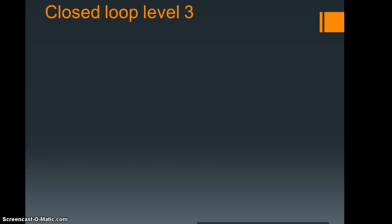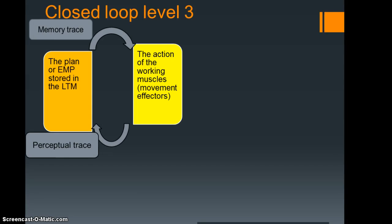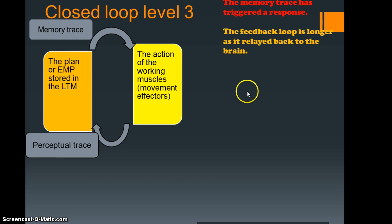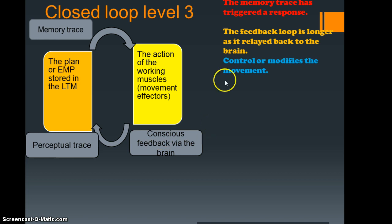The last of the loop controls is closed loop level three. For this one, we've got exactly as before: the executive motor program passed by the memory trace into the working muscles or muscle effectors, and we also have our perceptual trace. What's the difference? Once the memory trace has been triggered, the feedback loop is actually a lot longer, and the reason is it's relayed back to the brain. What you have here is conscious feedback via the brain. As opposed to subconscious, we're actually thinking about what we're doing. This allows us to control or modify the movement, and that's a significant difference.